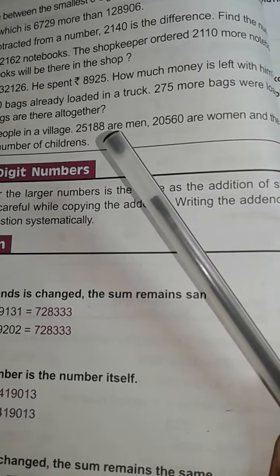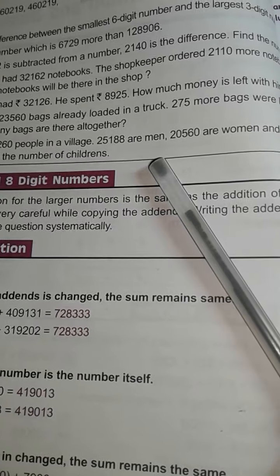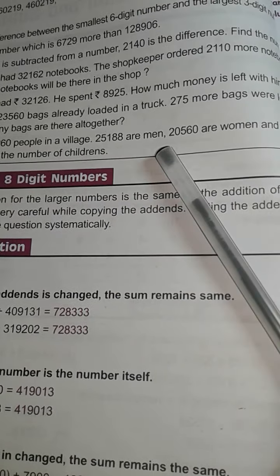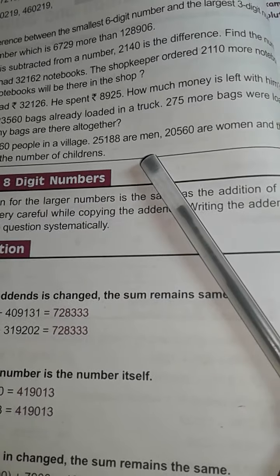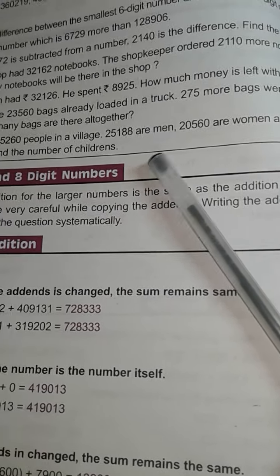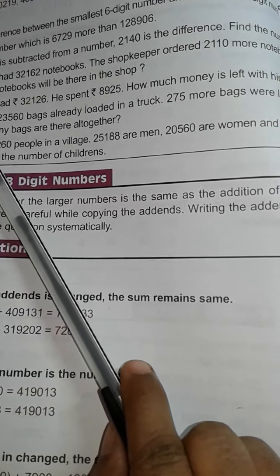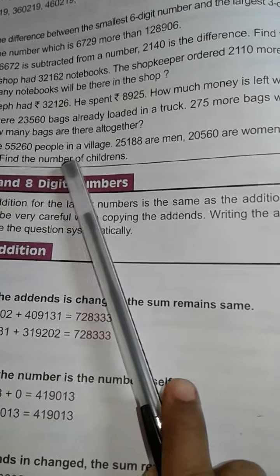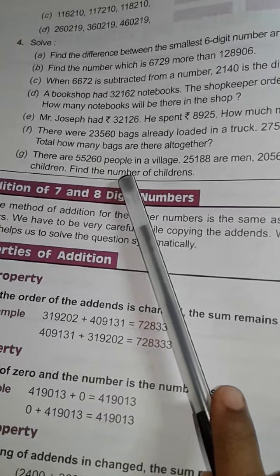Then you have to find out the children's number. What do you do? First you add these two numbers. How many men are there and how many women are there? You have to add first these two numbers. Then you subtract from the total people number. Then you find out your answer. What is the answer? That is the children's number. Okay.